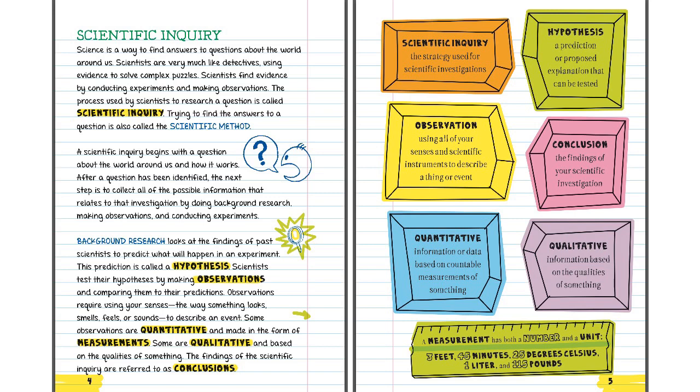A scientific inquiry begins with a question about the world around us and how it works. After a question has been identified, the next step is to collect all of the possible information that relates to that investigation by doing background research, making observations, and conducting experiments.